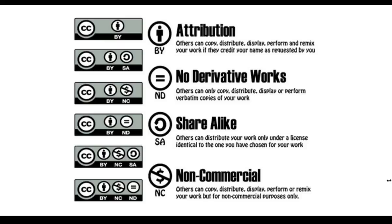Here are the Creative Commons labels — there are four main ones. First, Attribution: you can use my work but you have to credit me. Second, No Derivative Works: you can use my work but you can't change it, make a parody, or mash it up. Third, Share Alike: you can use my work but whatever you create with it you must release under the same label, a kind of paying-it-forward idea. Fourth, Non-Commercial: you can use my work but you can't make any money from it. All the labels shown are different combinations of those four symbols.